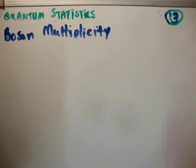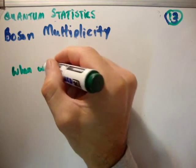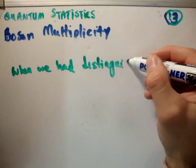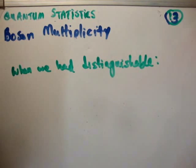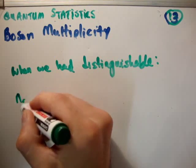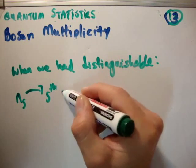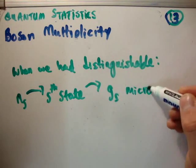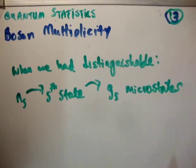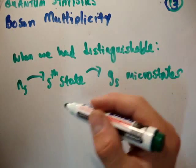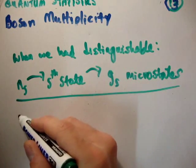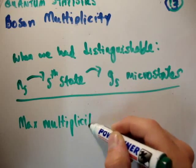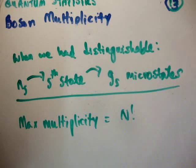So anyway, when we had distinguishable particles, we first selected N sub S for the S state, and then we broke that down between the G sub S microstates. Alright, that's what we did. So we said that the maximum multiplicity is N factorial. We know that.